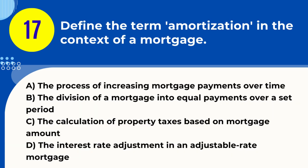Question 17. Define the term amortization in the context of a mortgage. A. The process of increasing mortgage payments over time. B. The division of a mortgage into equal payments over a set period. C. The calculation of property taxes based on mortgage amount. D. The interest rate adjustment in an adjustable rate mortgage. Answer: B. The division of a mortgage into equal payments over a set period.